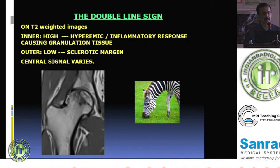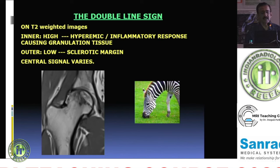The hallmark of AVN anywhere in the body is the double line sign, identified on a T2-weighted sequence. It shows an inner high signal, which represents a hyperemic or inflammatory response as the body attempts to repair the border of the osteonecrotic focus. Beyond that inner high signal is an outer low signal — a sclerotic margin — as the body tries to contain the osteonecrosis and prevent it from spreading into the rest of the femoral neck.